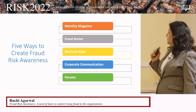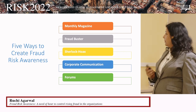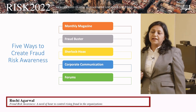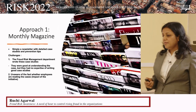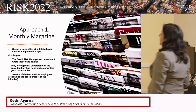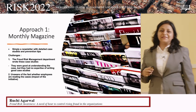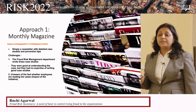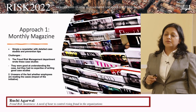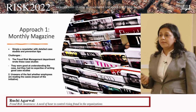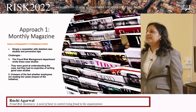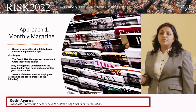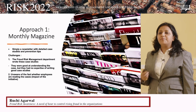In general, companies use monthly magazines, fraud busters, Sherlock Hoax, corporate communication, and forums to create fraud risk awareness. The first approach was a monthly magazine — a very unique idea. One company asked its fraud risk management department to develop in-depth case studies and give fraud prevention tips. However, nobody read these fraud monthly magazines, so they didn't know whether this initiative was creating any impact.